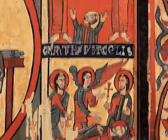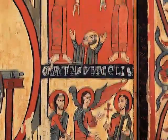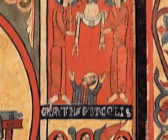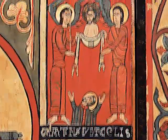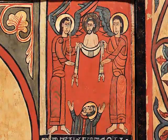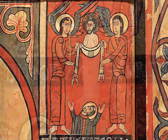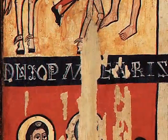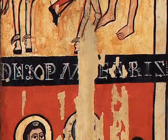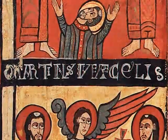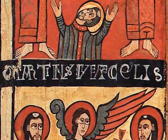These four scenes are divided by a horizontal band with an inscription in Latin, transcribed by Gros, that reads: "For being generous with the poor man on earth, Martin now resides in heaven."